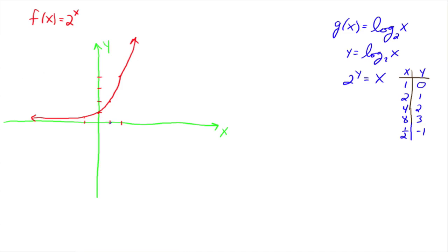So this time we're going to go through one, zero. And then when x is two, we're up here at one. When x is four, we're up here at two. When x is a half, we're down here at negative one. So this graph is going to do something like this.